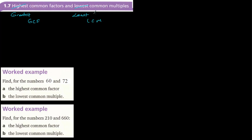We are going to study about Greatest Common Factor and Least Common Multiple. The first definition: what are multiples? If you want to find the multiples of a number, you multiply the number one by one with the counting numbers. For example, the multiples of three: three times one equals three, three times two equals six, three times three equals nine.